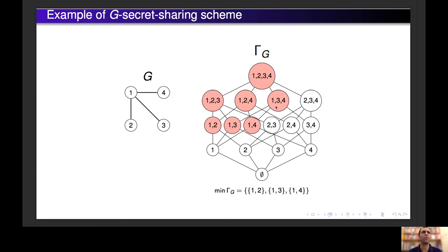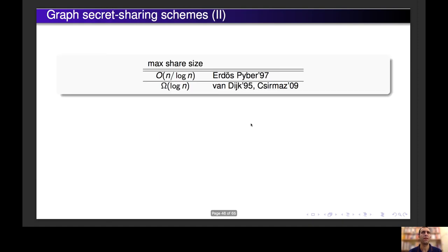We have an example where we have a graph with three edges, and the access structure determined by this graph is the one in which the minimal authorized subsets are the edges of the graph. Graph secret sharing schemes have been studied in many previous works. Using the simple construction we had before, we can construct a scheme in which the share size is n - 1. The best lower bound is log n. So still for graph secret sharing we have a huge gap between upper bounds and lower bounds, and we wanted to study the problem of optimizing the share size for this family of access structures.